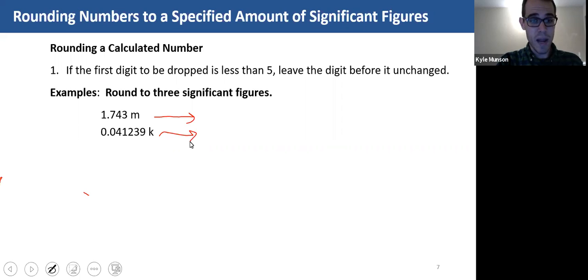So the first number had four significant figures, and if we rewrite it only having three, it would be like this. This is three significant figures. And again, this number, the first number to be dropped is less than five, so we leave the digit before it unchanged. We don't round it up.